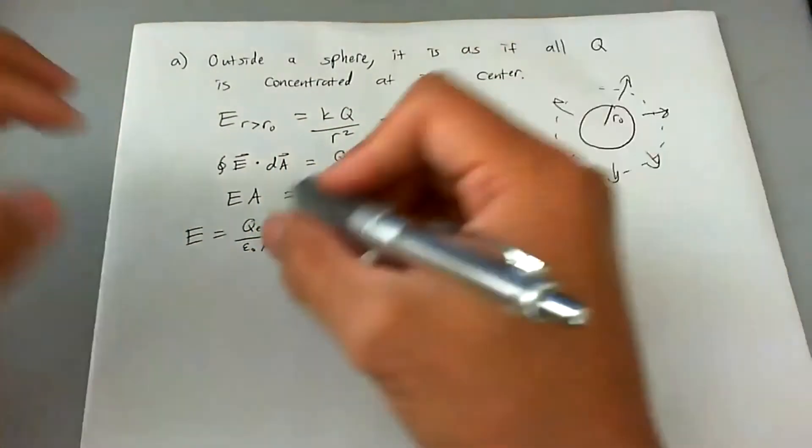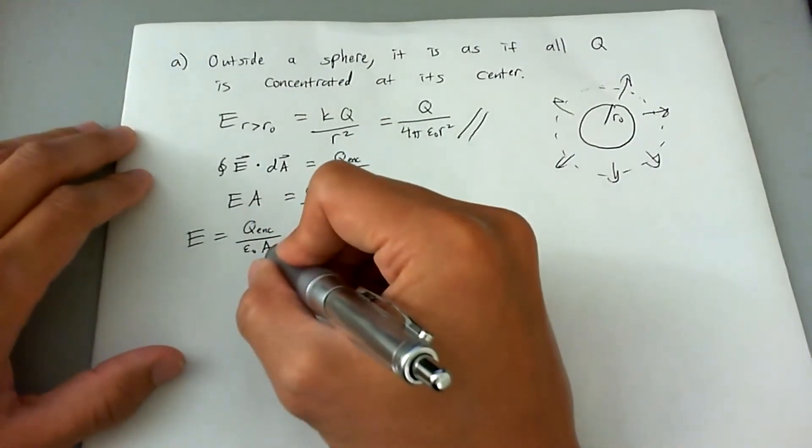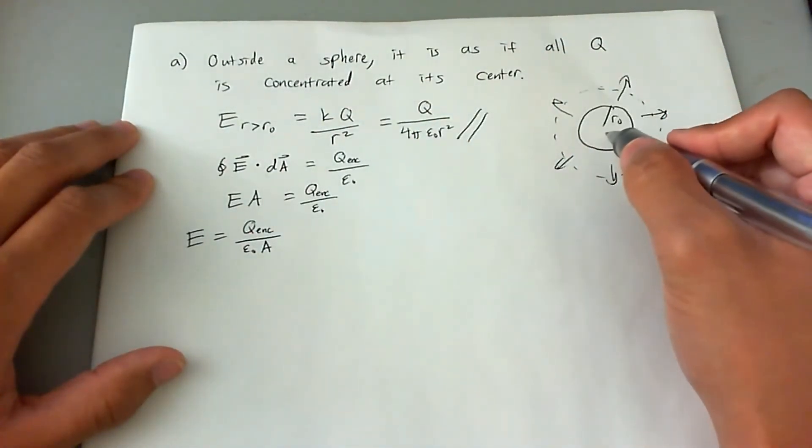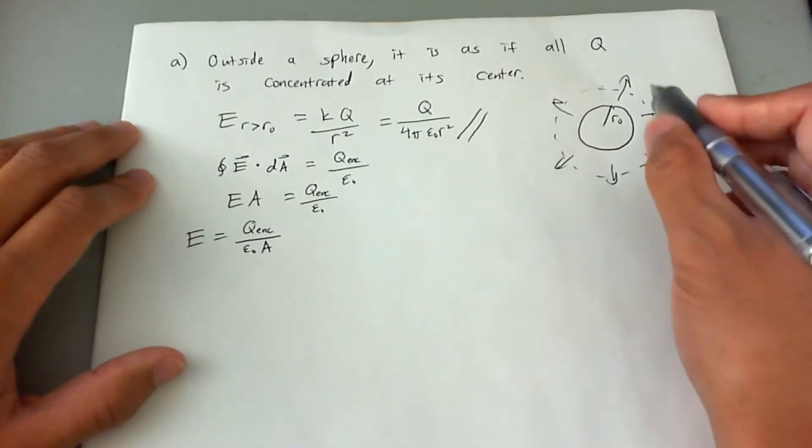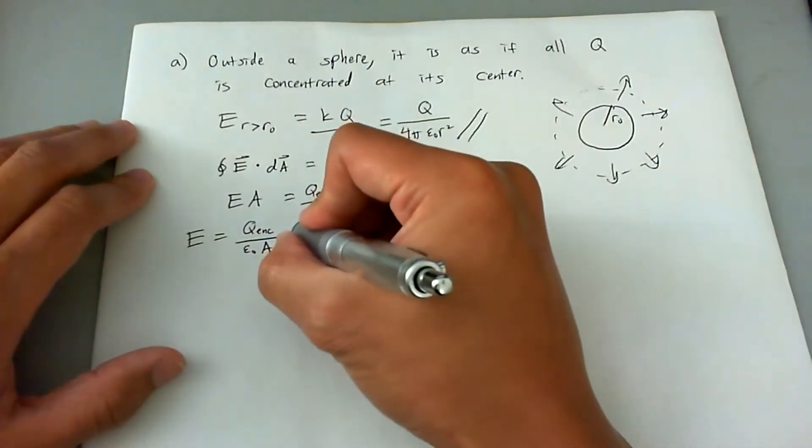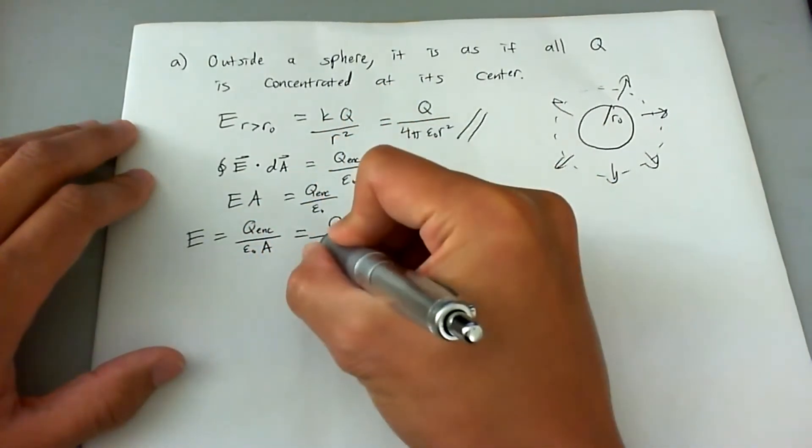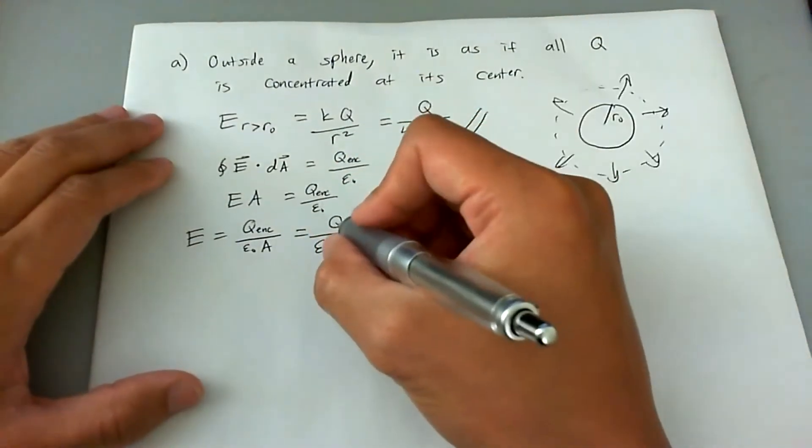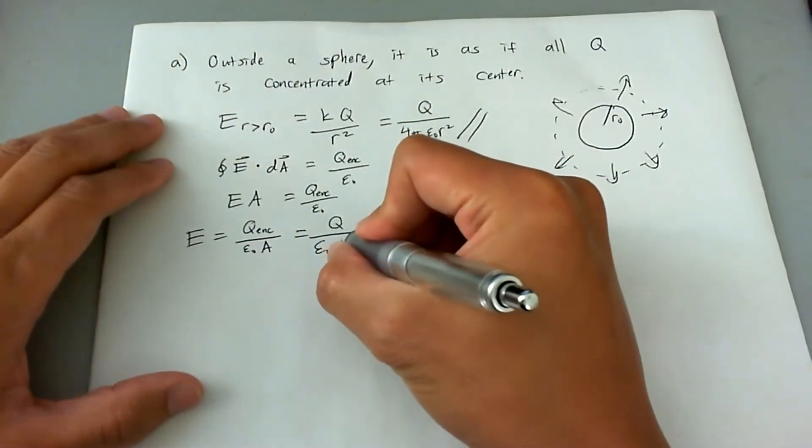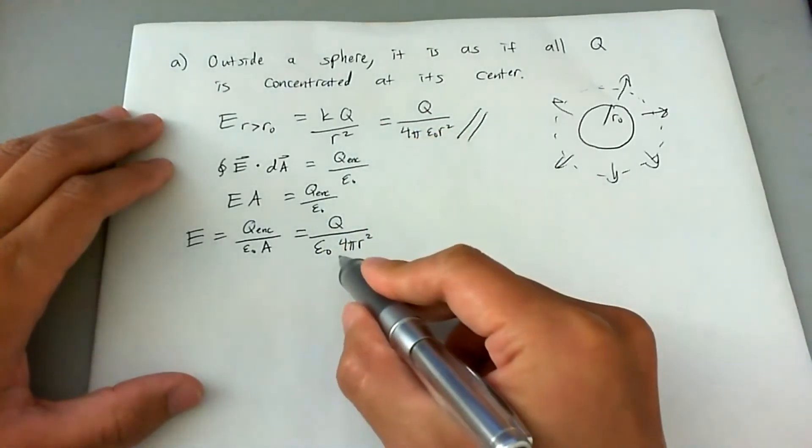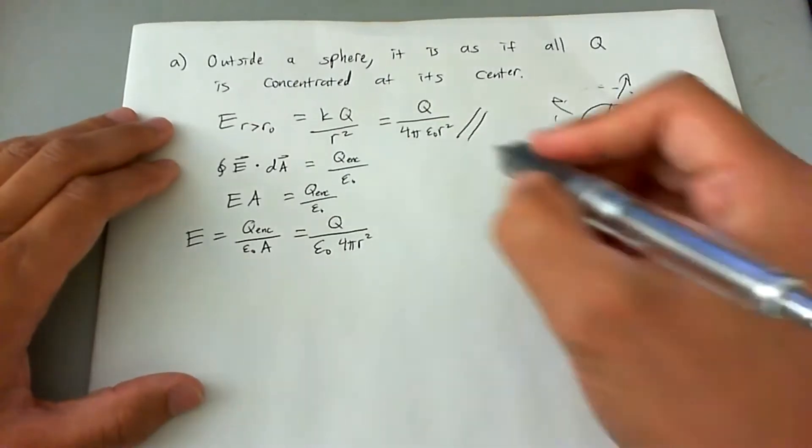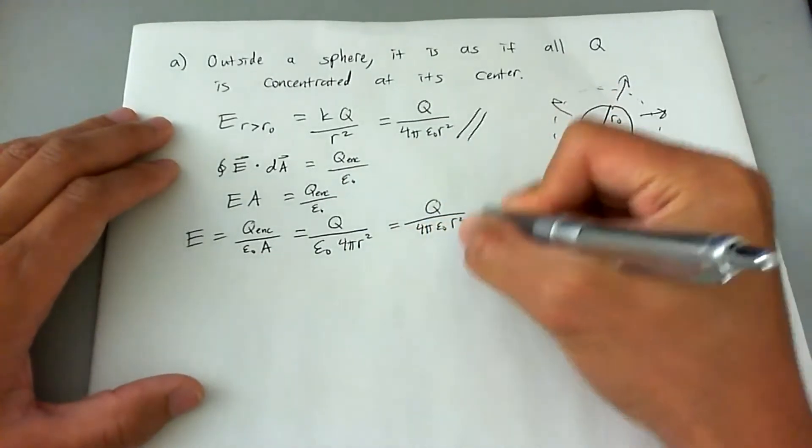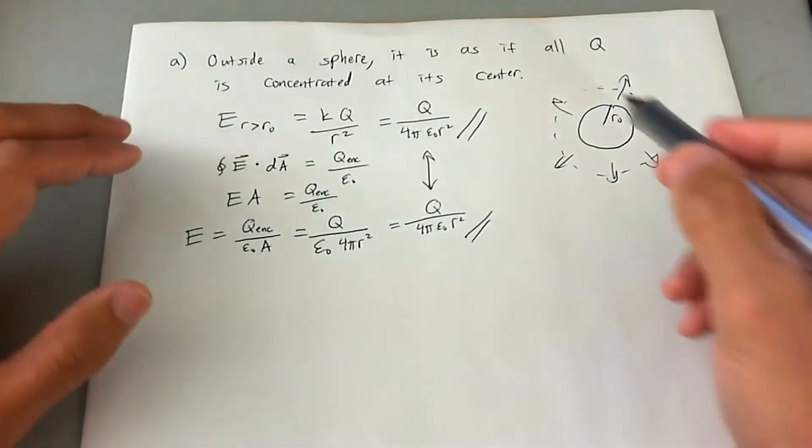Let's go ahead and put in all of the things that we know here. Q enclosed is just going to be the entire Q because the entire sphere with all the charge inside it is within the Gaussian shape. So Q enclosed is simply all of Q. What's the area of this Gaussian sphere? It's just going to be 4πR squared, the surface area of a sphere. And that ends up being Q over 4π epsilon naught R squared. And these two match, which means that it's basically proven.